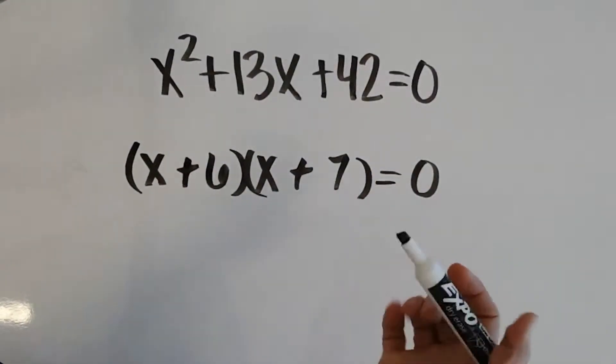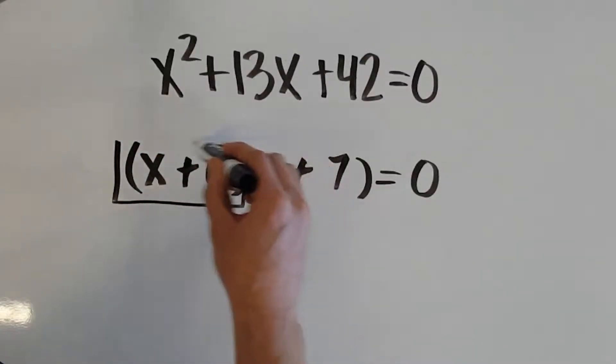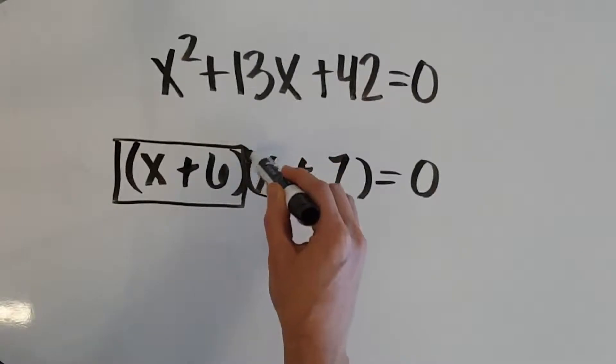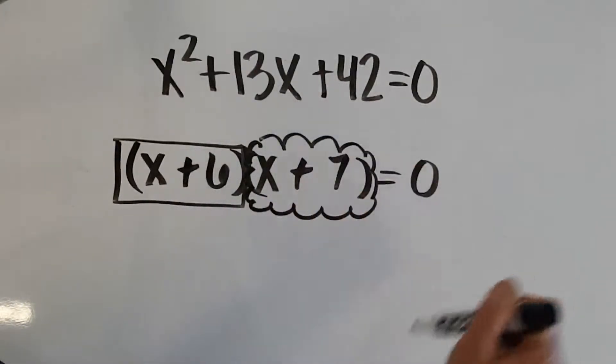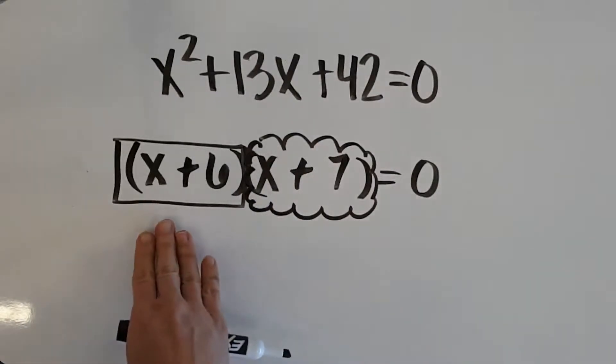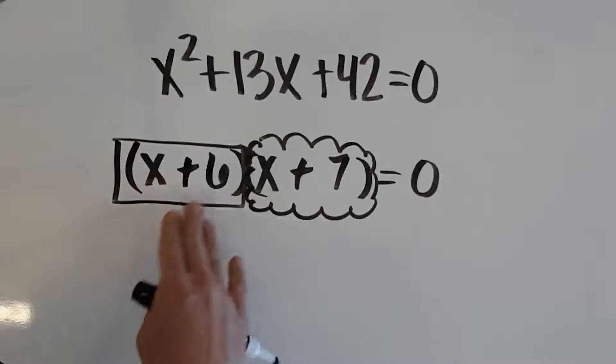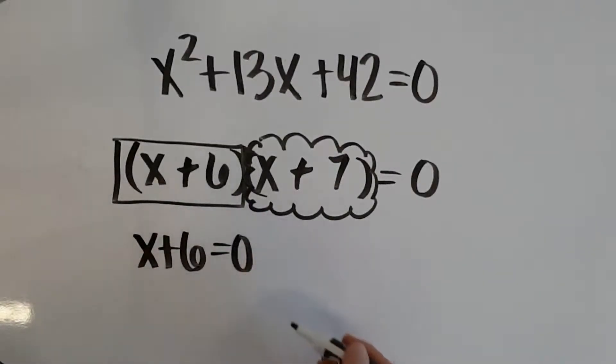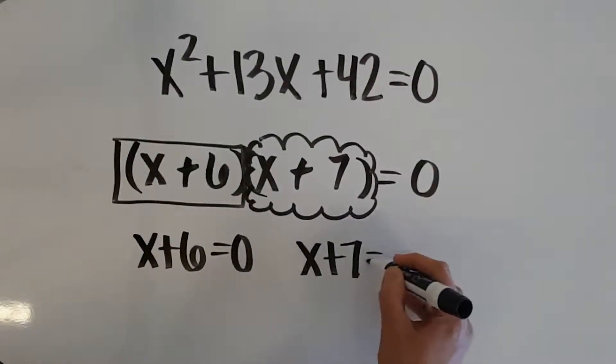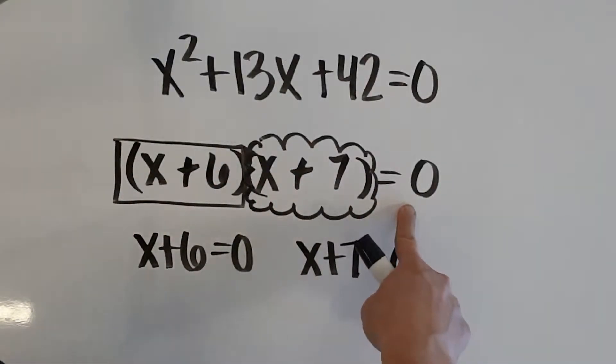Once we have it factored, we know, well, I'm taking two things. So, I have this one factor times this other factor. And I get 0. So, if I take my box and multiply it by this bubble and get 0, that means either my box, which is x plus 6, has to be equal to 0, or my bubble, x plus 7, has to be equal to 0, in order for this to multiply two things and get 0.